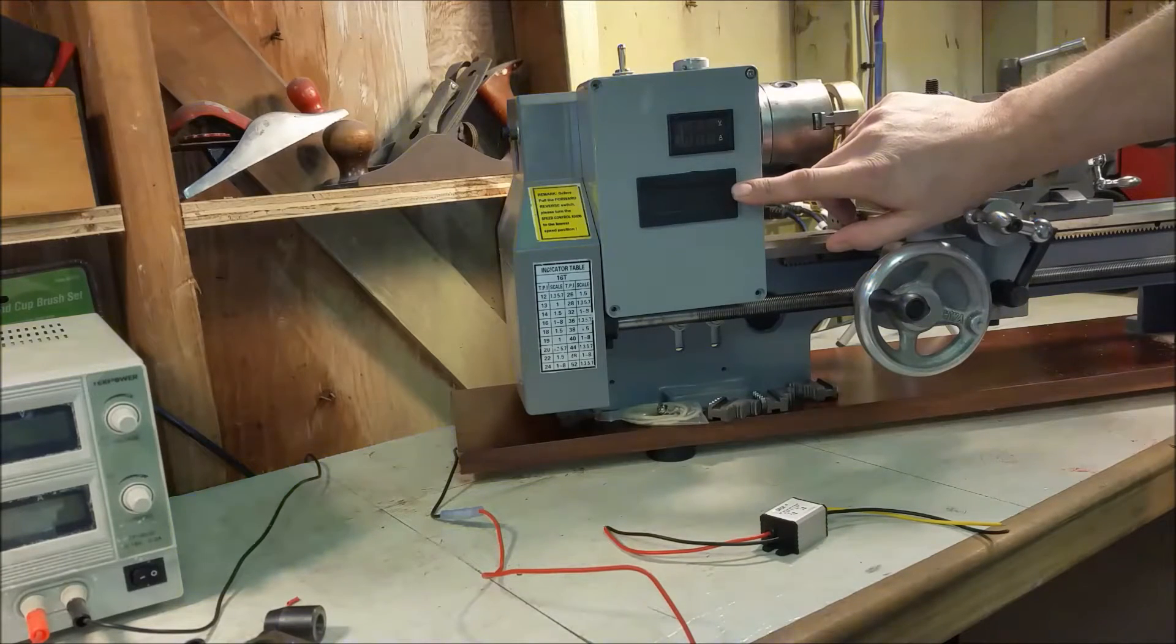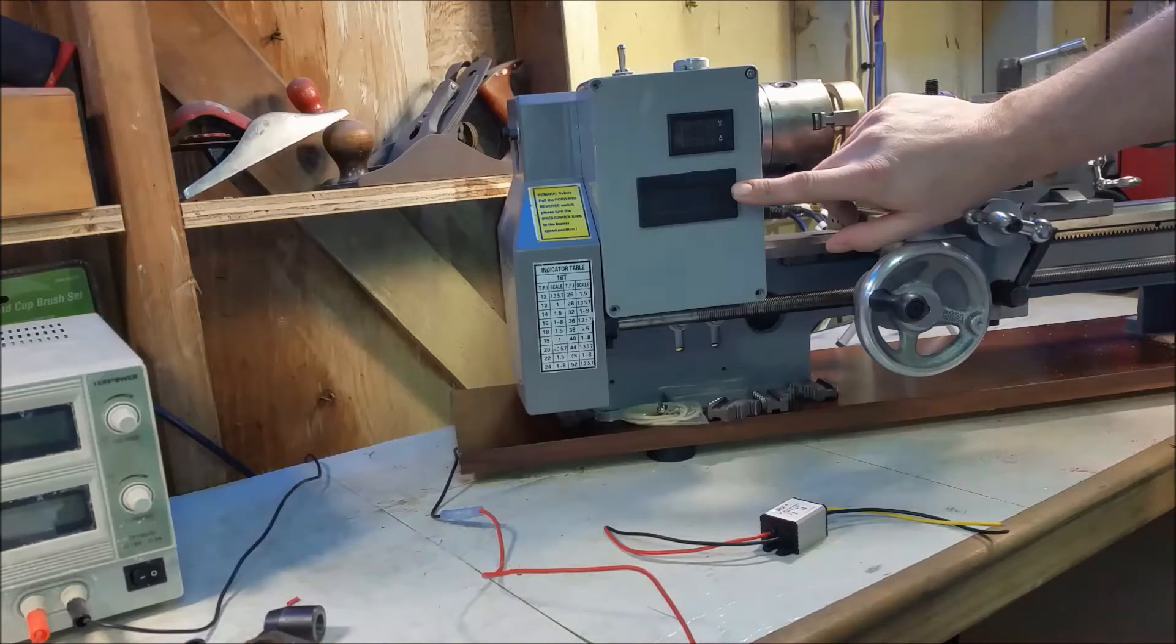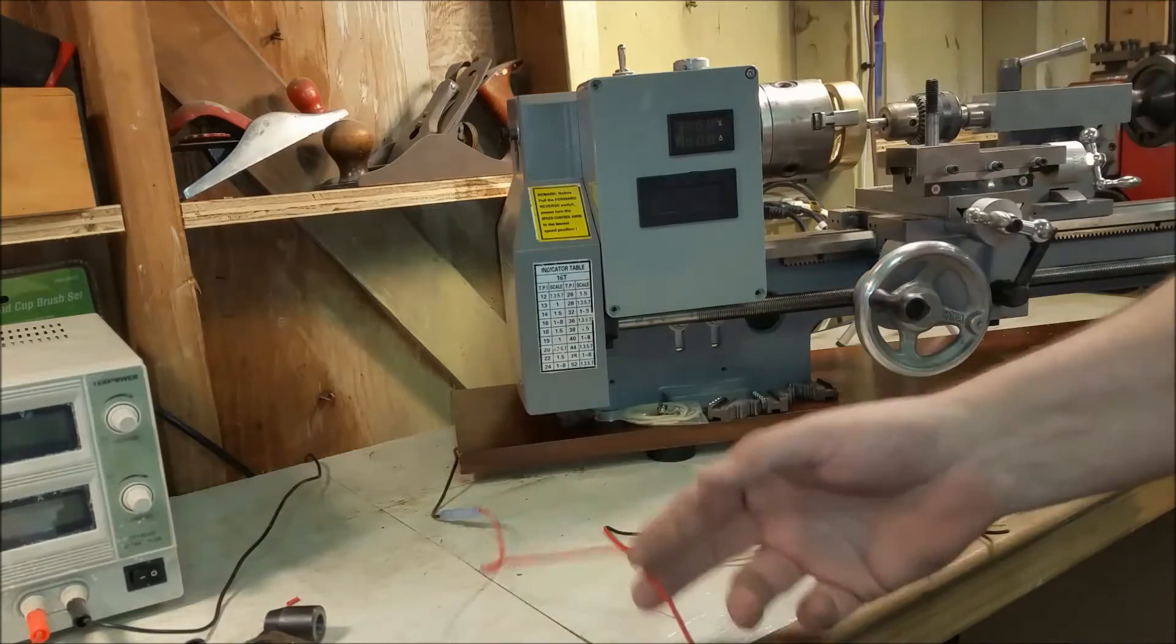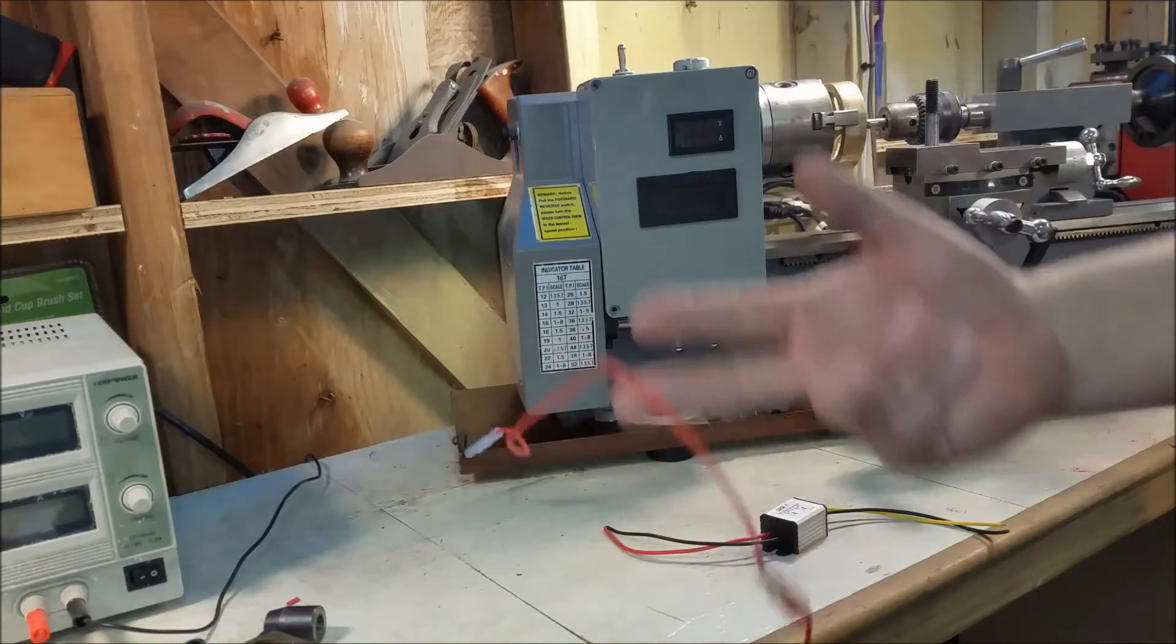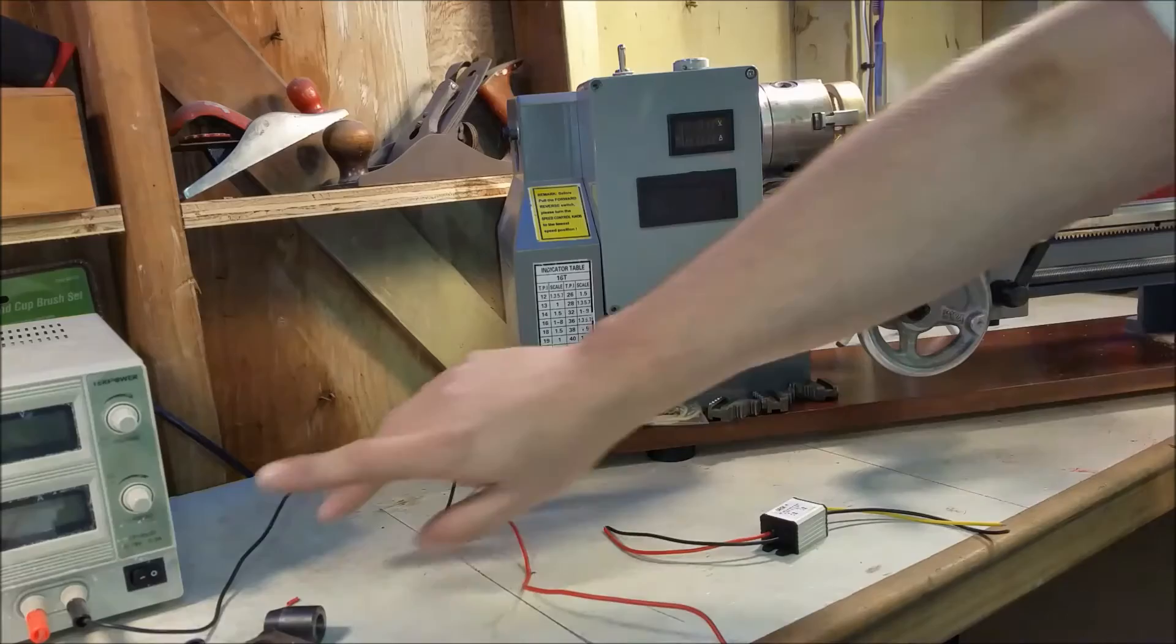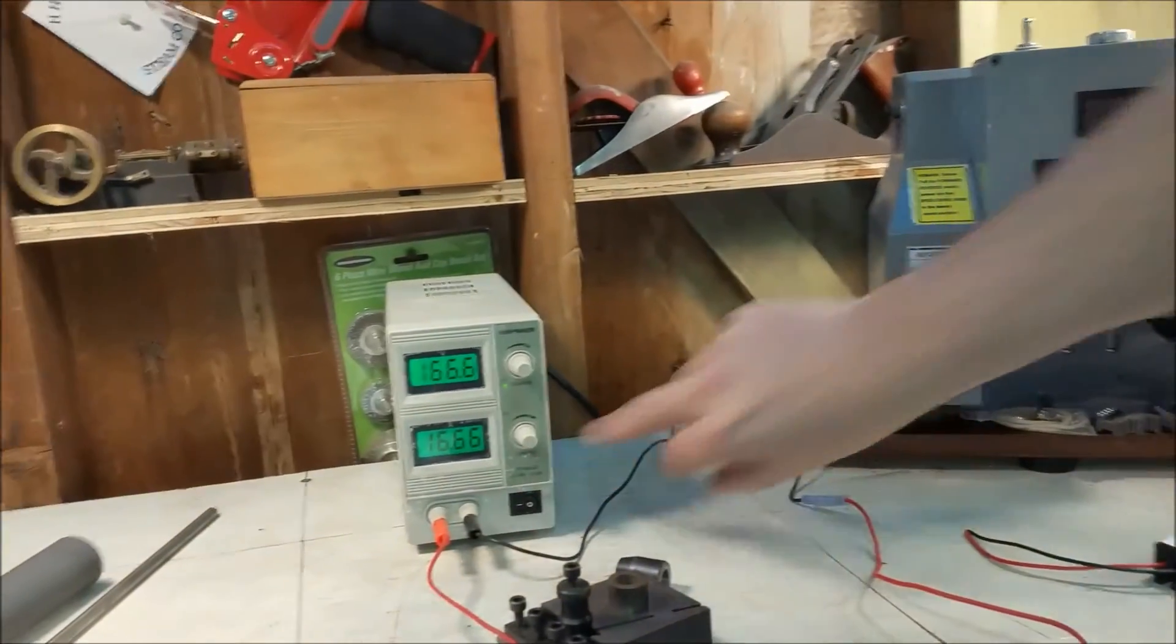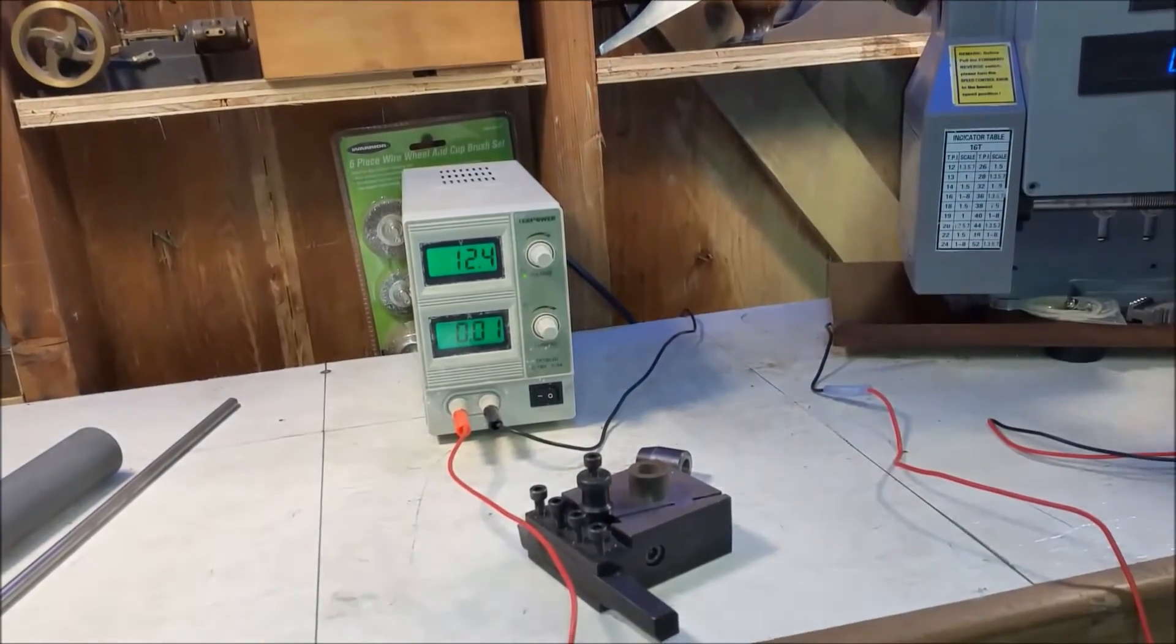The tachometer runs on 8 to 15 volts, which is half, and I've got this wire supplying the power right now. So if we come over here, I'll turn on the 12-volt power supply to get the tach to come on.